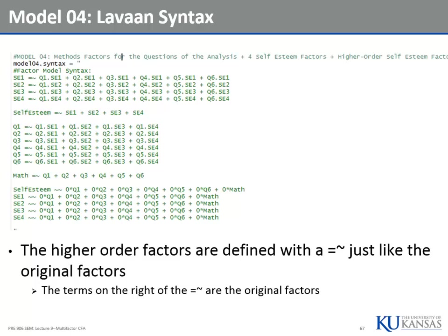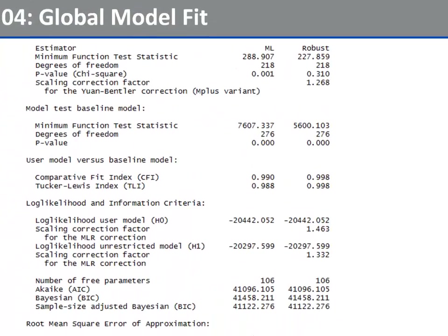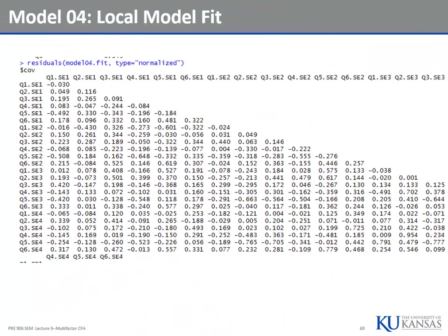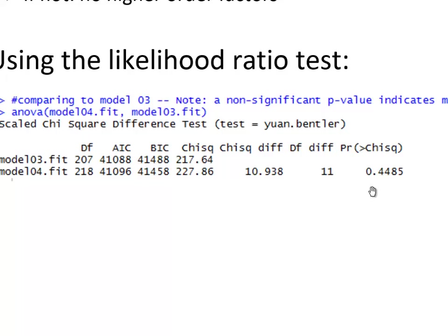Model four is nested within model three — model three is the saturated version of model four, so we have a likelihood ratio test available. Let's look at model fit first — sure enough, the model fits. Usually when you get the saturated version to work, model fit doesn't get much worse when you put in the higher order versions. The local model fit looks good. The likelihood ratio test for whether we need higher order factors has a p-value of 0.4485, testing model four against model three. This suggests model four fits as well as model three, so it looks like higher order factors are supported.